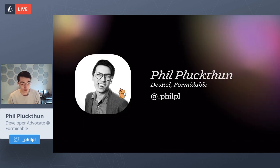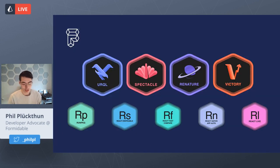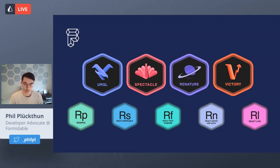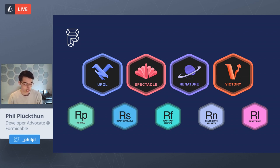A bit about me first. I'm a developer advocate at Formidable. You can find me on Twitter at underscore philpl. If you know Formidable, you might have seen us because of our open source libraries. We have quite the selection: Urkel, Spectacle, Renature, Victory, and a lot more that I can't fit onto a single slide.